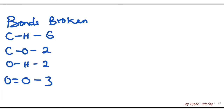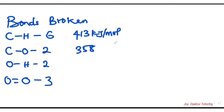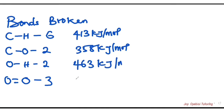The next step is to look up the bond enthalpy for each of these specific bonds. For C–H the bond enthalpy is 413 kJ/mol. For C–O it is 358 kJ/mol. For O–H it is 463 kJ/mol. And for O=O it is 495 kJ/mol.